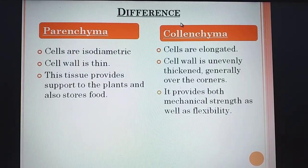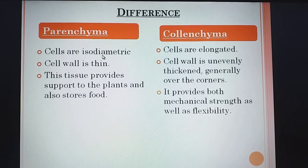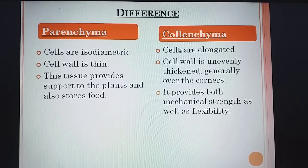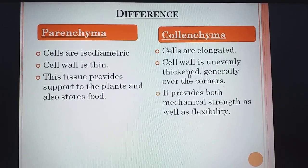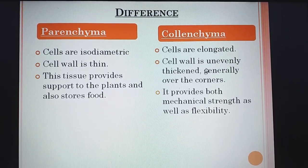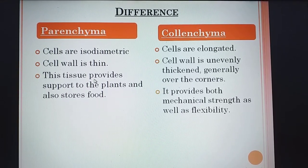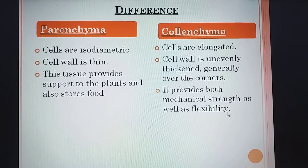Difference between parenchyma and colenchyma: In parenchyma, cells are isodiametric — meaning all cells have more or less the same diameter — whereas in colenchyma, the cells are elongated. In parenchyma, cell wall is thin; in colenchyma, cell wall is unevenly thickened, generally at the corners, which is why intercellular space is very little. Parenchyma provides support to plant and stores food, whereas colenchyma provides both mechanical strength as well as flexibility.